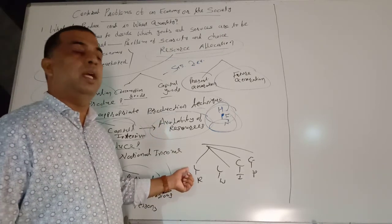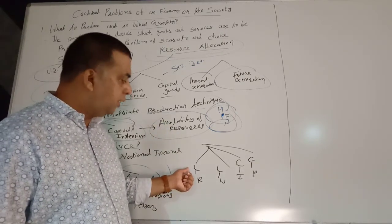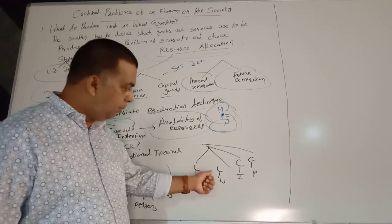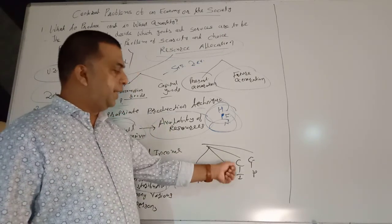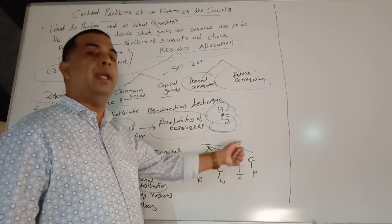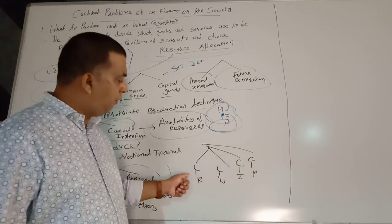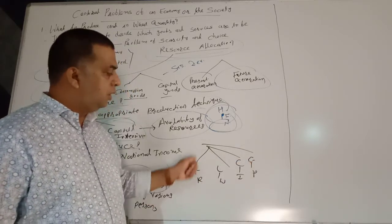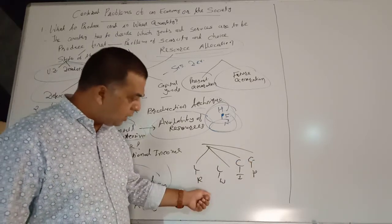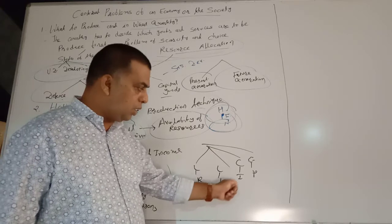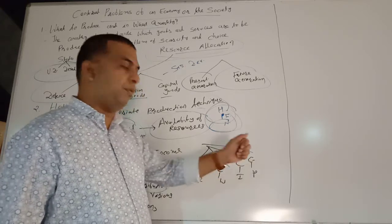And how to distribute national income among various factors of production is called functional distribution. The four factors of production are land, labour, capital, and entrepreneur, which receive their rewards in the form of rent, wages, interest, and profit respectively.